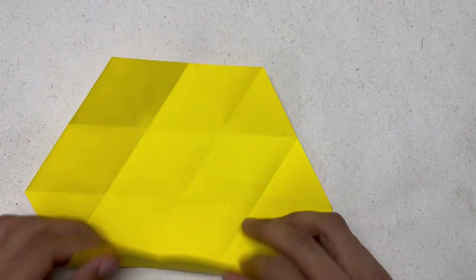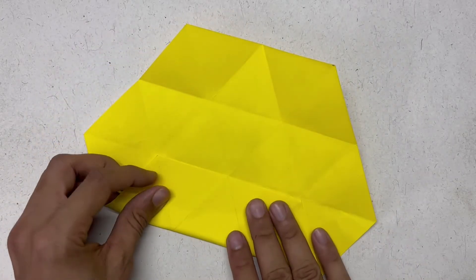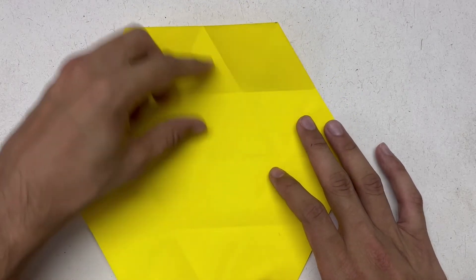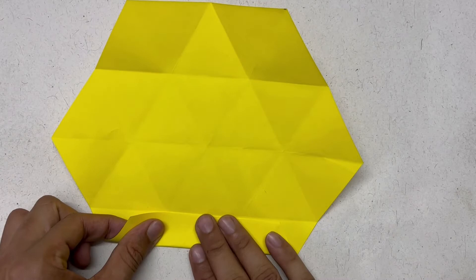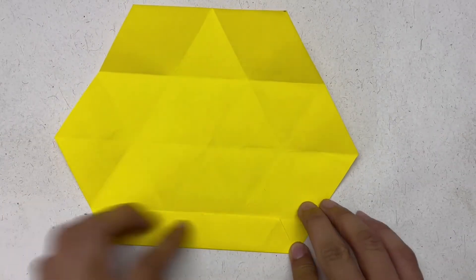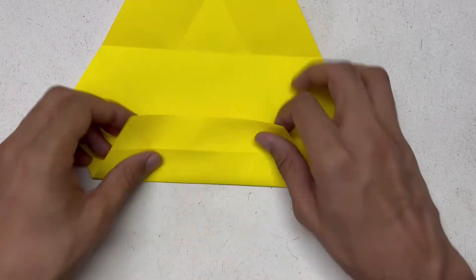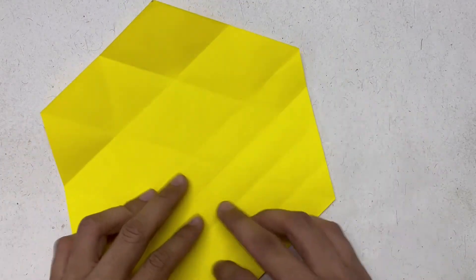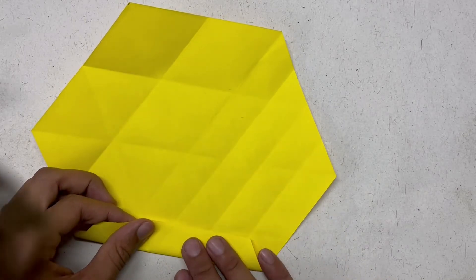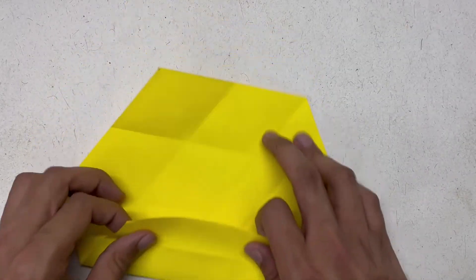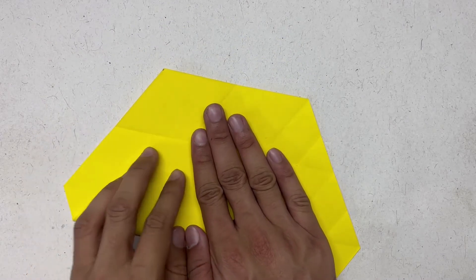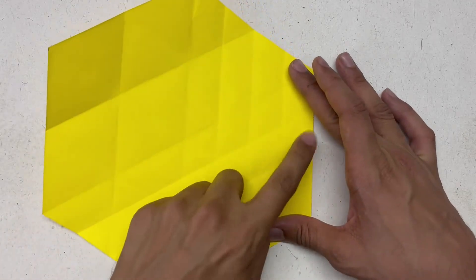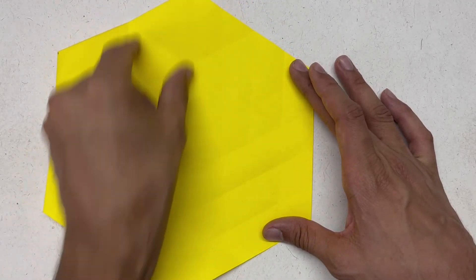When you divide one fourth in half, you'll get one eighth. So if you do like this, this is one eighth. I'm just going to show it to you once more. You want to do this on all sides, so this is four and four more will come here.